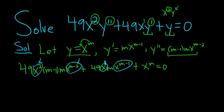Okay. So we have 49, m minus 1, m, and then combining these gives us x to the m, plus 49m.